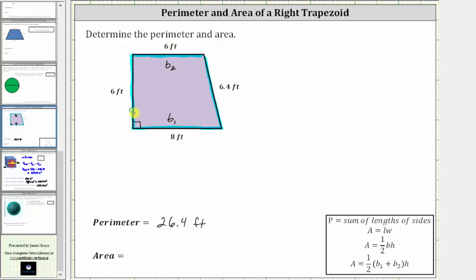And because we have a right trapezoid, this length here is the height; the height is 6 feet. So the area is equal to one-half times the sum of the two bases, which is 8 feet plus 6 feet, times the height of 6 feet.